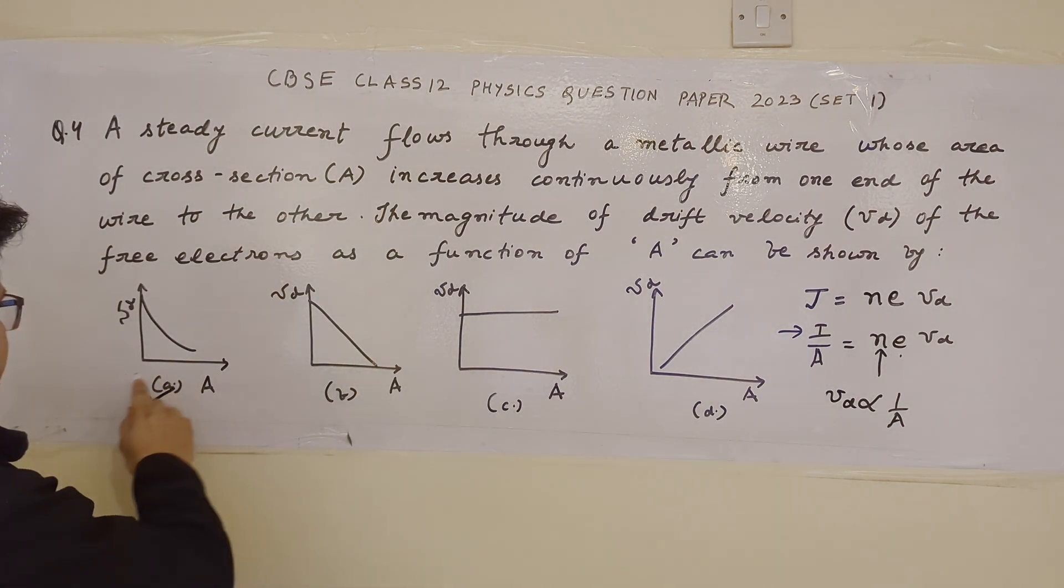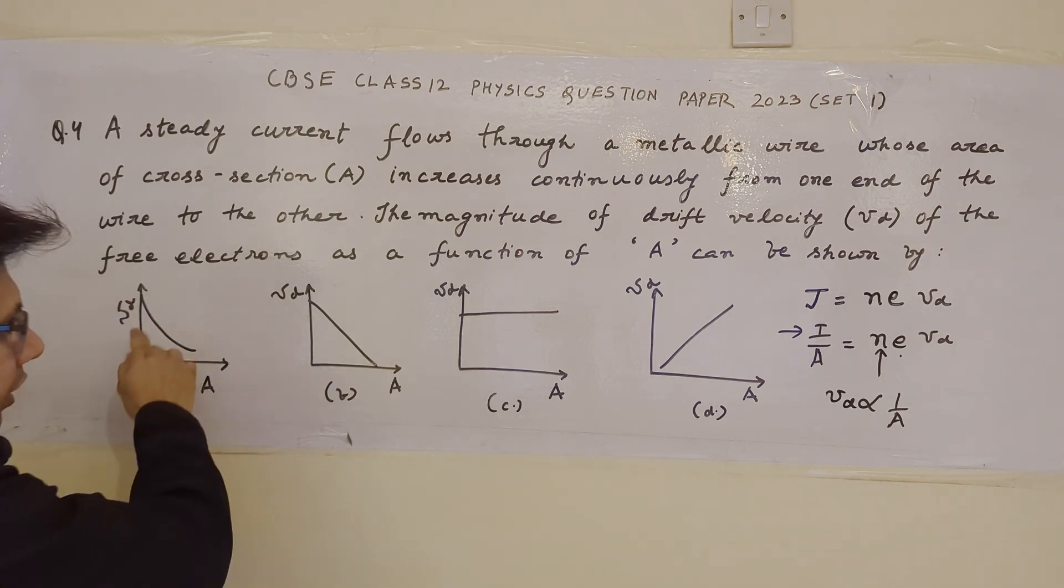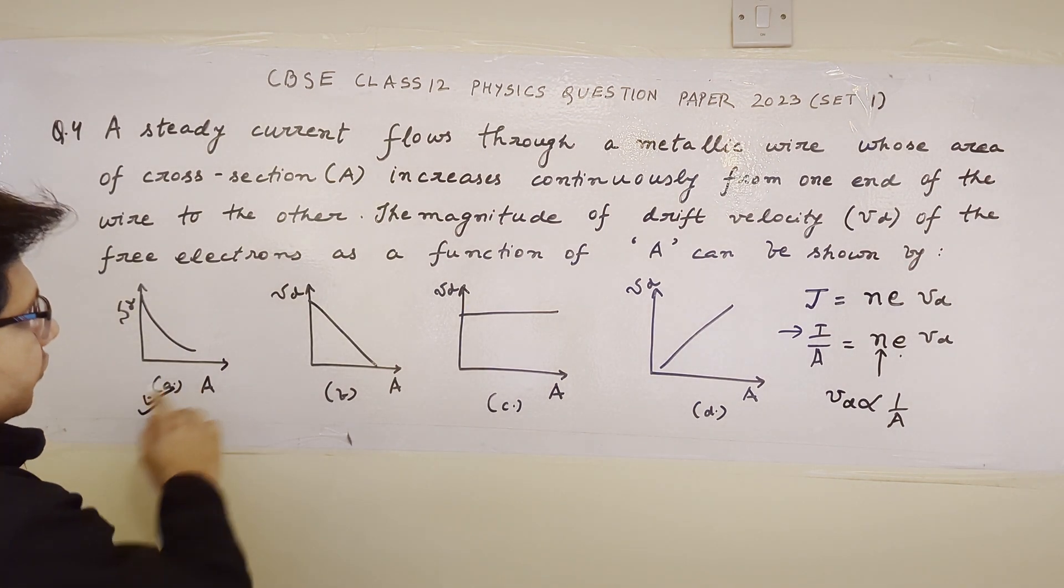So graph A is the correct answer. When the area of cross-section increases, the drift velocity goes down in a nonlinear manner. So this is the final answer.